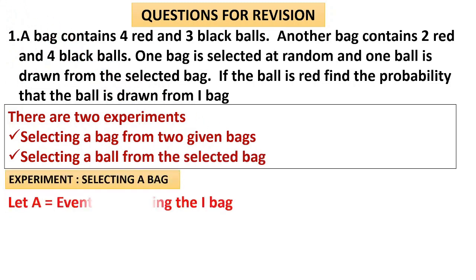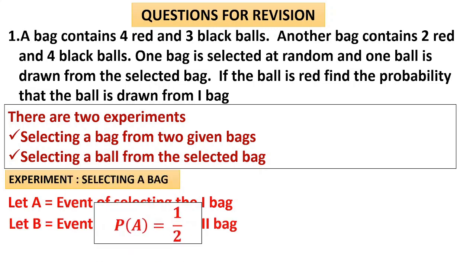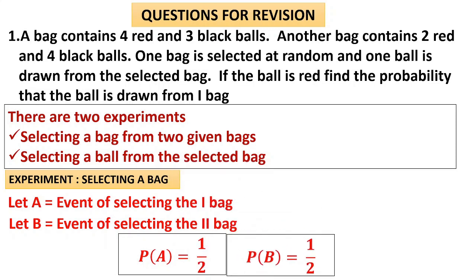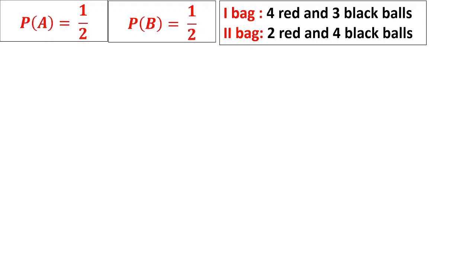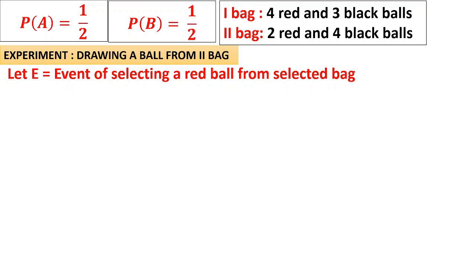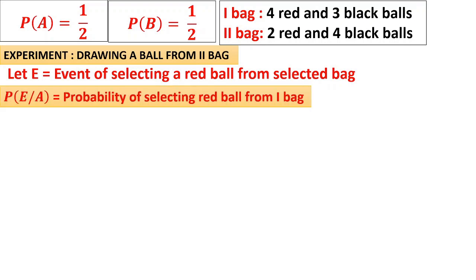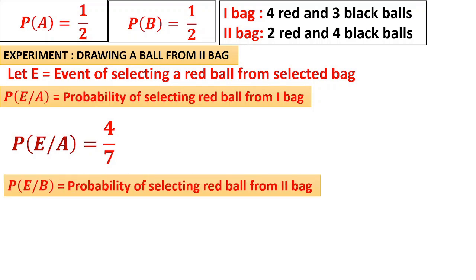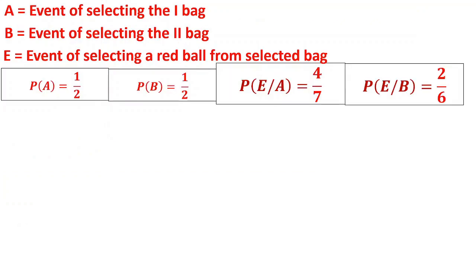Selecting a bag is the first experiment. Event of selecting the first bag is A; event of selecting the second bag is B. P(A) = 1/2 and P(B) = 1/2. If there are three bags, it would be 1/3 each. Now let us find everything required for the Bayes' theorem formula. First bag contains 4 red and 3 black; second bag contains 2 red and 4 black. Let E be the event of selecting a red ball. P(E|A) = 4/7, since there are 4 red balls in the first bag. P(E|B) = 2/6 = 1/3, since there are 6 total balls and 2 are red in the second bag. Everything is ready for Bayes' theorem.